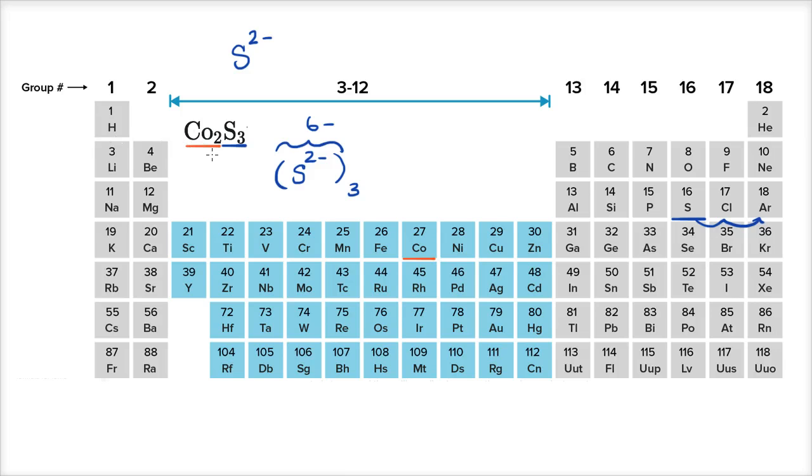And then the cobalt, we have two of them. And so these two cobalts have to offset this six minus charge. They have to have a six plus charge.